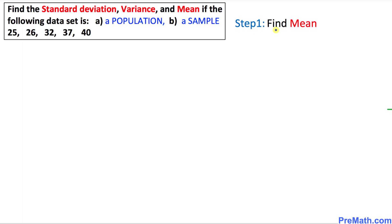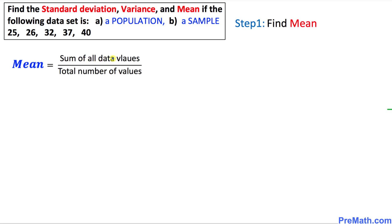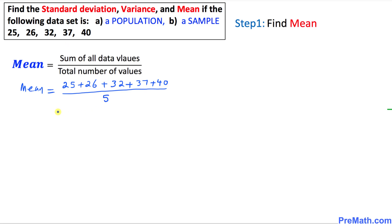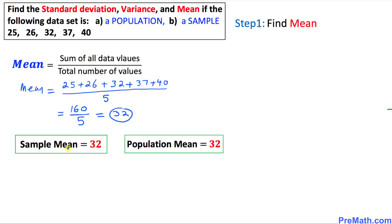In step number one, we are going to find the mean. The mean formula states: sum of all data values divided by the total number of values. Let's add up all these values: 25 plus 26 plus 32 plus 37 plus 40, divided by 5. The numerator adds up to 160 divided by 5, which gives us 32. So our sample mean is 32, and also the population mean is 32.